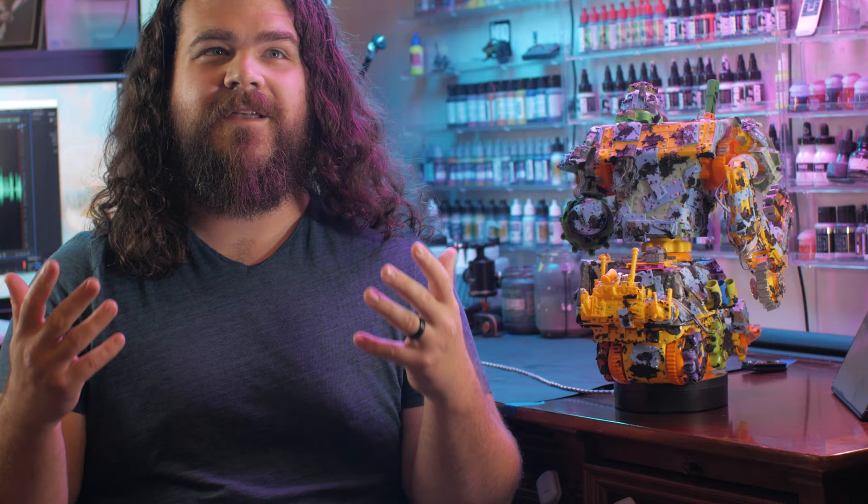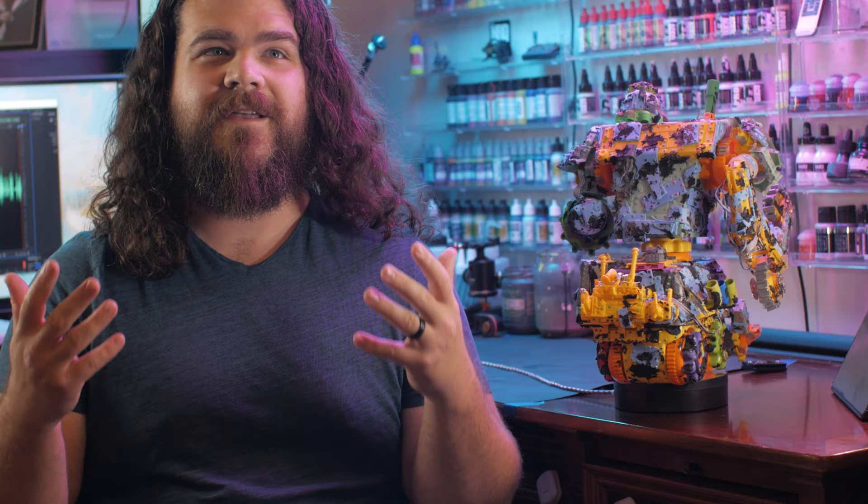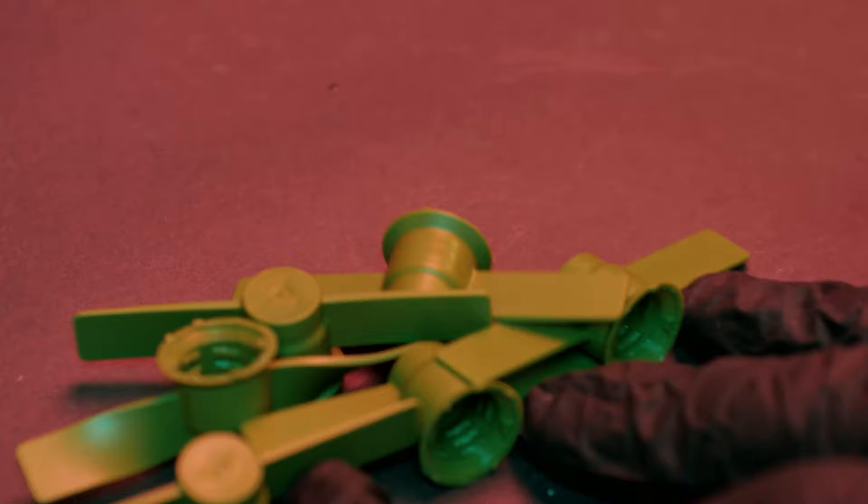One thing I love about orc vehicles is a big old death roller. There's something just so serene and peaceful about a spiky spinning cylinder of death. Let's make one of those real quick out of some applesauce pouch lids.